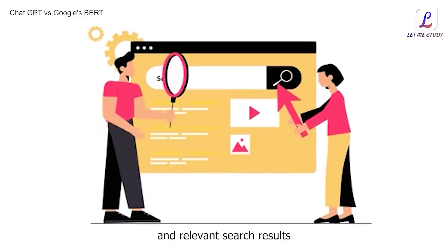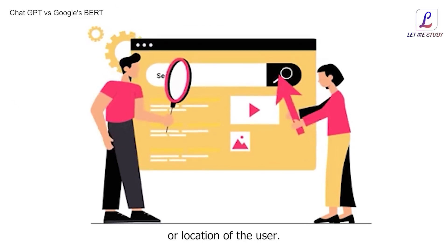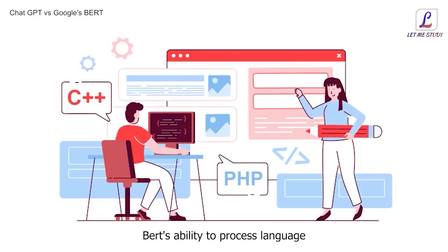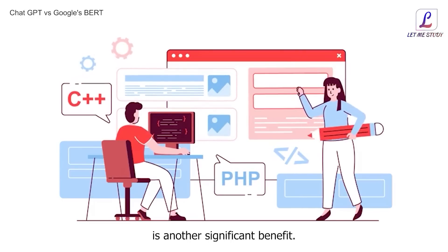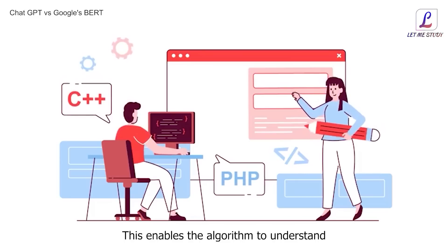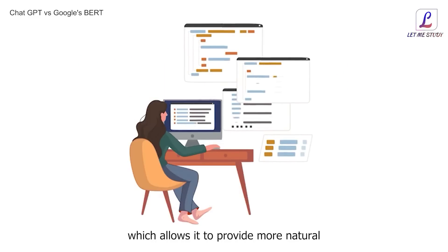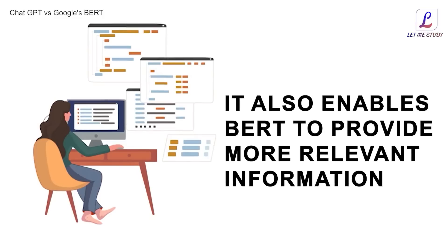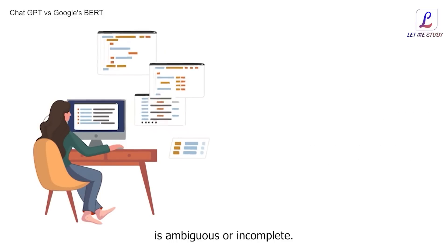This results in more accurate and relevant search results, regardless of the language or location of the user. BERT's ability to process language with a higher level of abstraction is another significant benefit. This enables the algorithm to understand high-level concepts and subjects, which allows it to provide more natural-sounding and comprehensive responses. It also enables BERT to provide more relevant information, even when the user's query is ambiguous or incomplete.